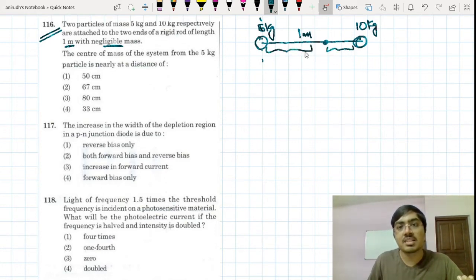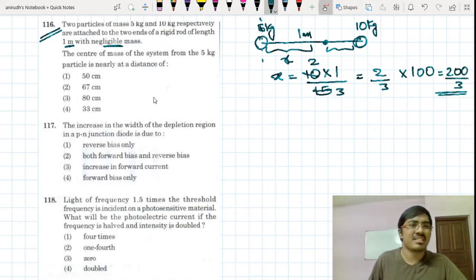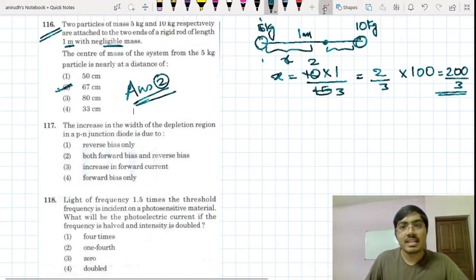Another way to do is by learning the direct equations. So if you want to find this much distance, x is equal to other mass m2 multiplied by total distance 1 divided by m1 plus m2. 5 plus 10 is 15. So this is 2 by 3 multiplied by 1 meter. So you can take it as 100 centimeter, 200 by 3, so this is 67 something. So my answer is obviously option number two.